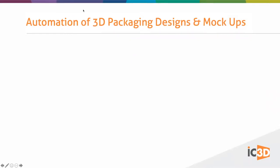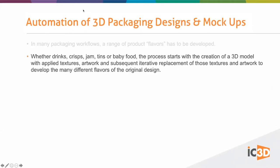What we're going to focus on is automation of 3D packaging design and mock-ups. In many packaging workflows, a range of product flavors has been developed — different languages and variants of a single product, whether that's a drink, a packet of crisps, jam tins, or baby food. The process starts with the creation of a single 3D model with one artwork or one drink flavor, and that single model would have applied textures, different artwork, and then subsequently you'd replace all of those items to develop different flavors or language variants.